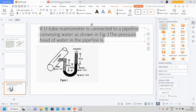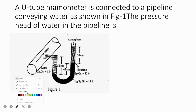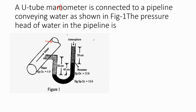Hello my friends, how are you? I am going to see another question that was asked in RGB. This is the numerical. A U-tube manometer is connected to a pipeline conveying water as shown in the figure. The pressure head of water in the pipeline — since it is open to the atmosphere, the pressure of the atmosphere is 0.